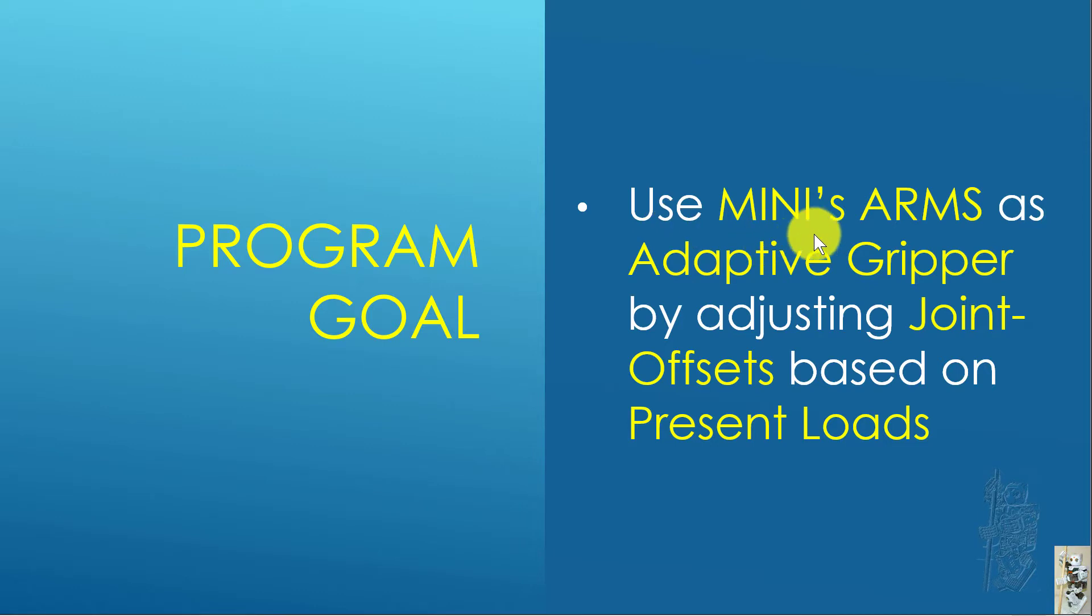In this program, what we're going to do is use the mini arm as an adaptive gripper by adjusting joint offsets. Previously, joint offsets were used between minus 255 and 255, but this time we do the same based on the present load on those servos.